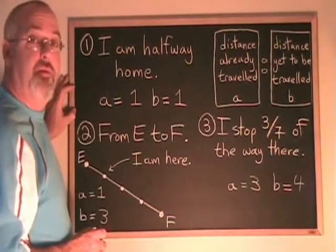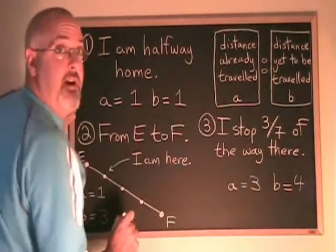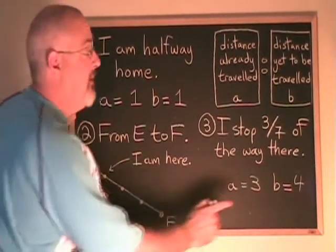If I stop three-sevenths of the way there, the distance traveled is three. The distance yet to be traveled is four.